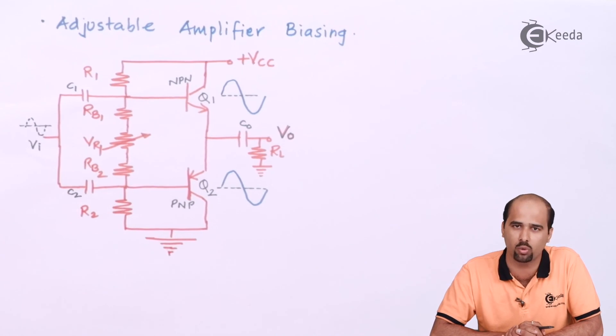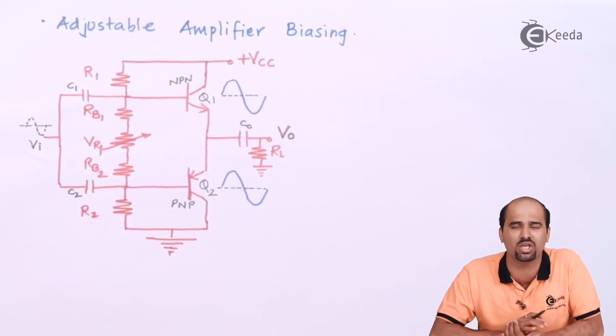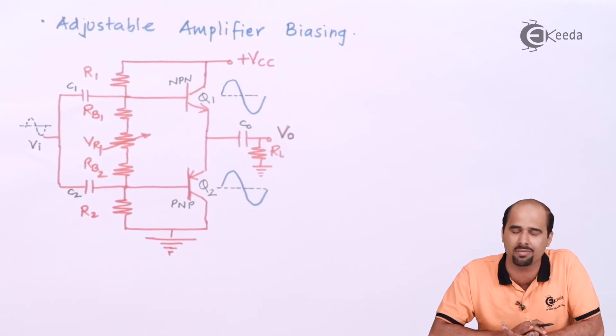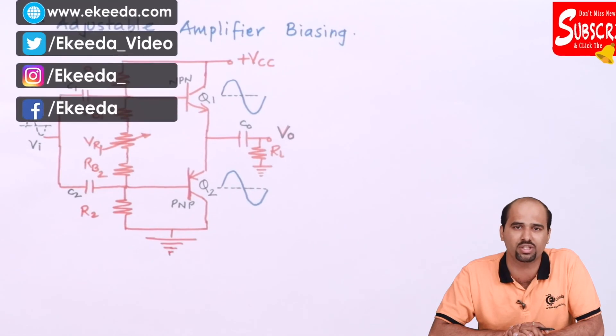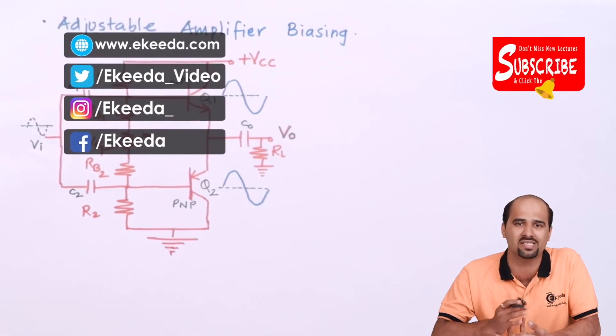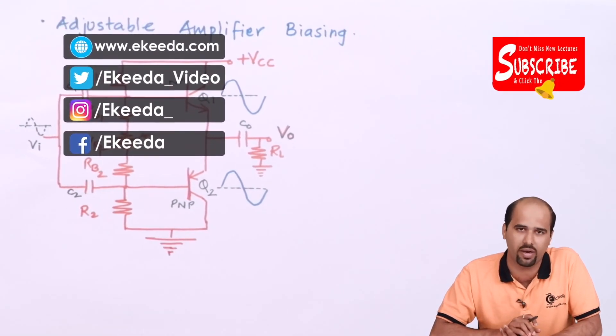This is because to reduce the crossover distortion and to achieve the high efficiency. Obviously, efficiency of class AB amplifier is same as that of class B amplifier, but the conduction angle increases due to which I will get the more enhancement over the class B power amplifier.